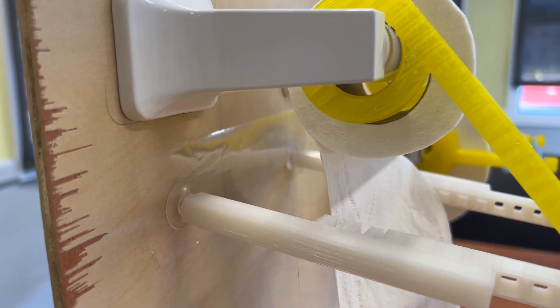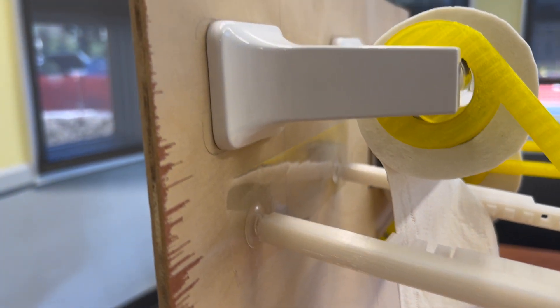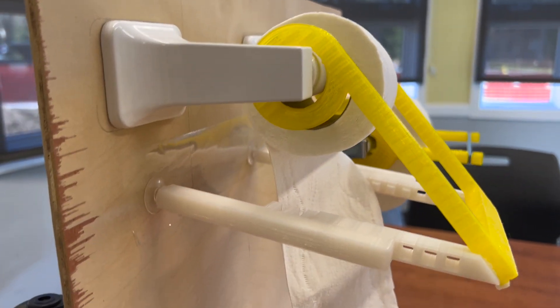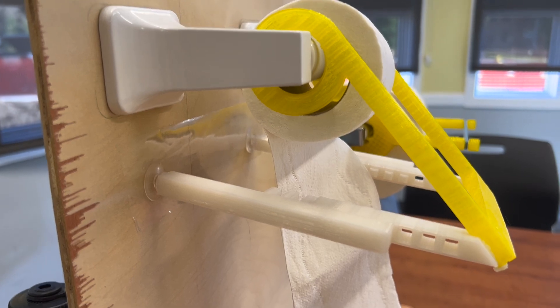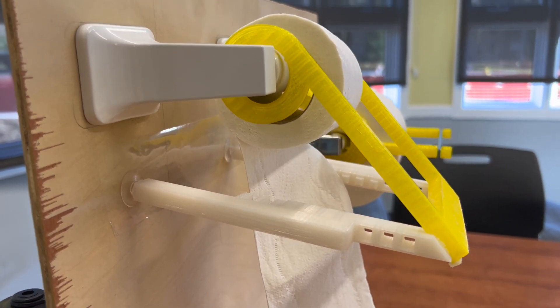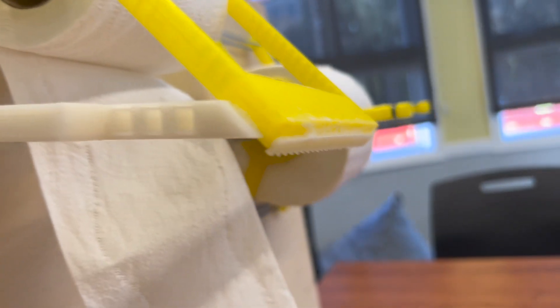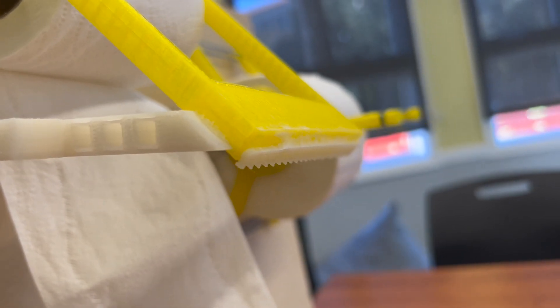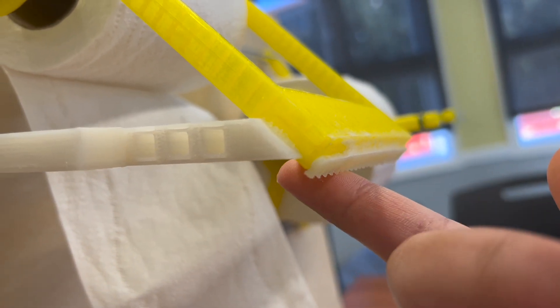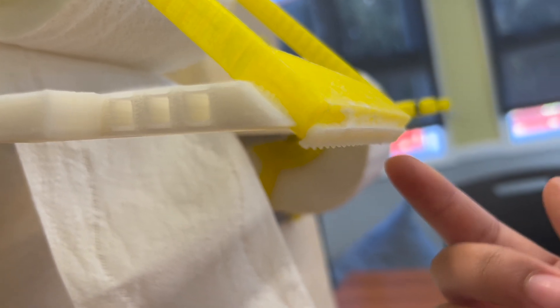One handy trick we discovered was that if you just put a piece of packing tape against the wall or another surface that suction cups might not stick to so well, then the suction cups work really well. We also have a 3D printed blade here. It's just 3D printed, so it's really dull. You can see right here, it's much duller than even a butter knife.